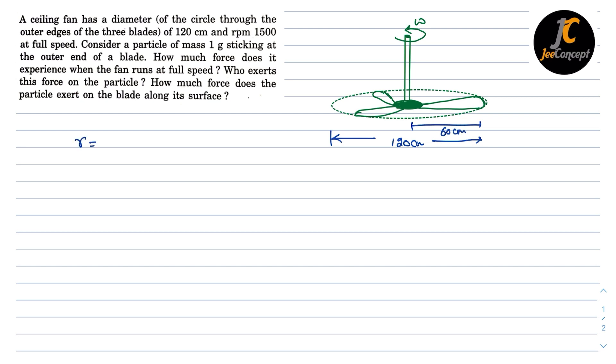radius of the circular path is going to be 60/100, that means 0.6 meters. Now let's say the particle is at this end position and the RPM of this fan is given as